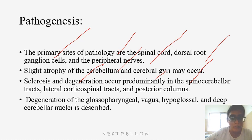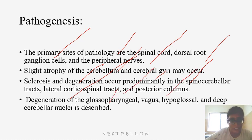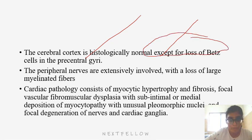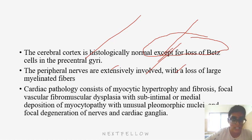Degeneration of the glossopharyngeal, vagus, hypoglossal nerves and deep cerebellar nuclei is discrete. The cerebral cortex is histologically normal except for loss of Betz cells in the precentral gyrus — an important MCQ point. Peripheral nerves show extensive involvement with loss of large myelinated fibers. Cardiac pathology consists of myocytic hypertrophy, fibrosis, focal vascular fibromuscular dysplasia, and focal degeneration of nerves and cardiac ganglia.